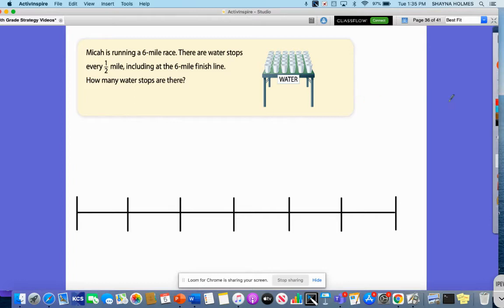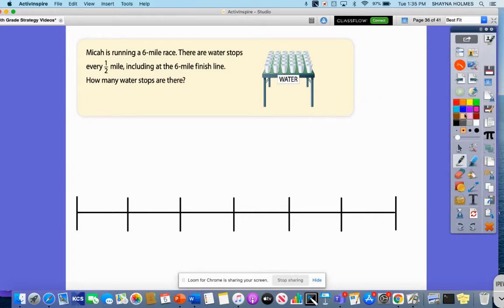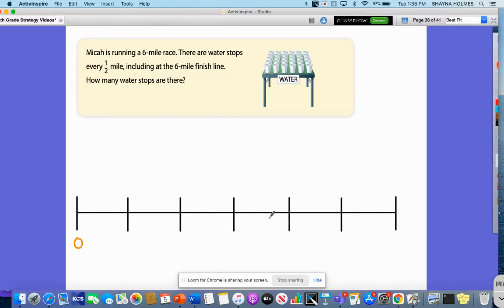So what I'm going to do this model on is I'm going to look at a number line here. So right here, I'm going to make sure I divide all these into my six miles. So here is zero, this would be one mile, two, three, four, five, and six.